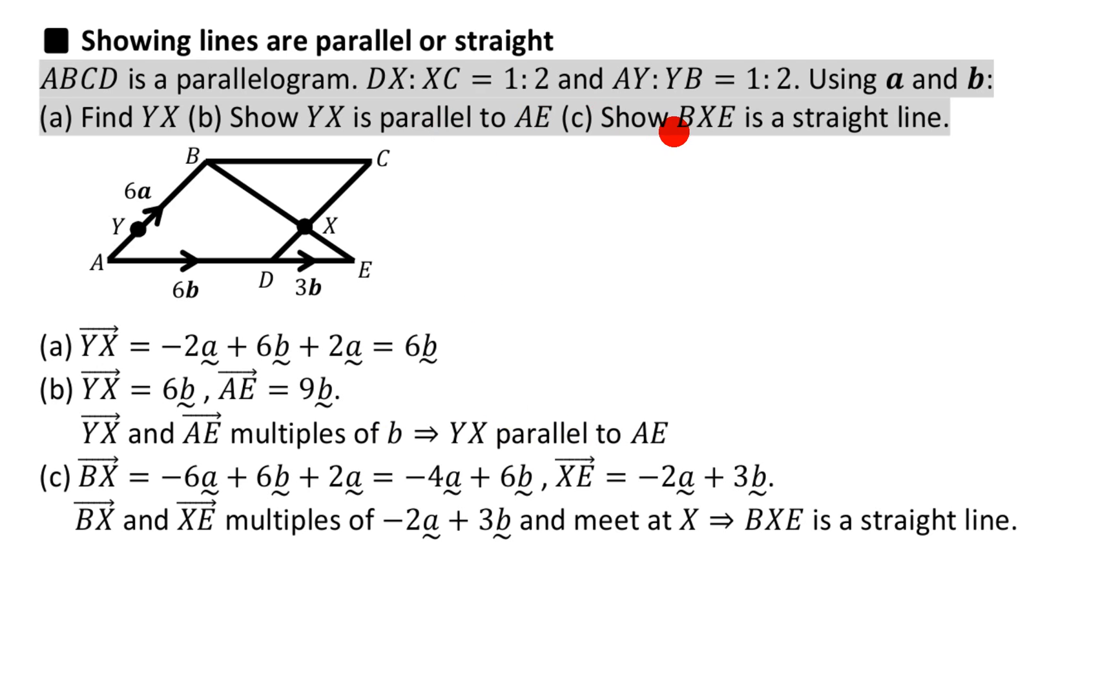Now, showing something is a straight line, like this one, is the same idea. Show BXE is a straight line. All you have to do is the same idea - you have to find out what each bit is. This one's kind of hiding a part of the question. In the previous question it said show that this is parallel to this.